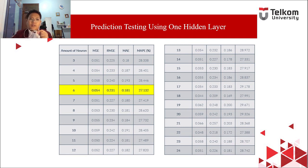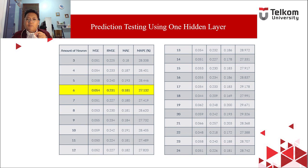This next slide shows the result of testing using one hidden layer, where we configured the number of neurons from one up to 24 neurons inside the hidden layer. The results showed the best outcome from 100 epochs for each different number of neurons. Our best result using one hidden layer was with six neurons, showing a MAPE of 27.132%, which is what we focused on for every testing.